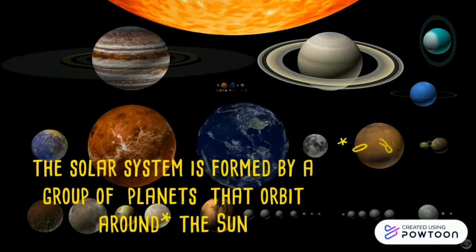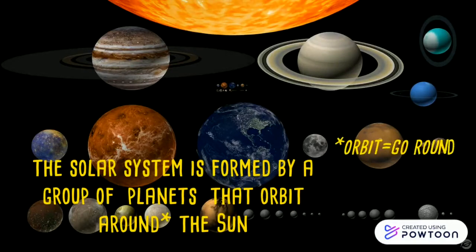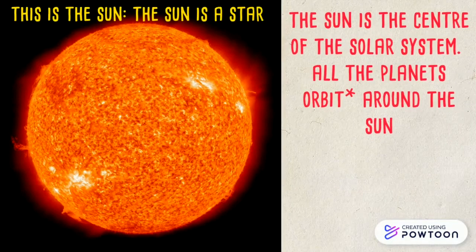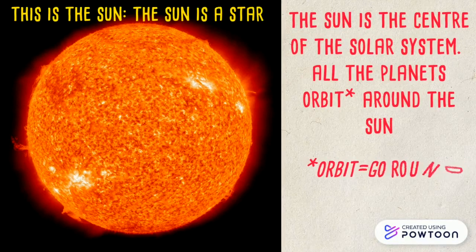The Solar System is formed by a group of planets that orbit around the Sun. This is the Sun. The Sun is a star. The Sun is the center of the Solar System, and all the planets orbit around the Sun.